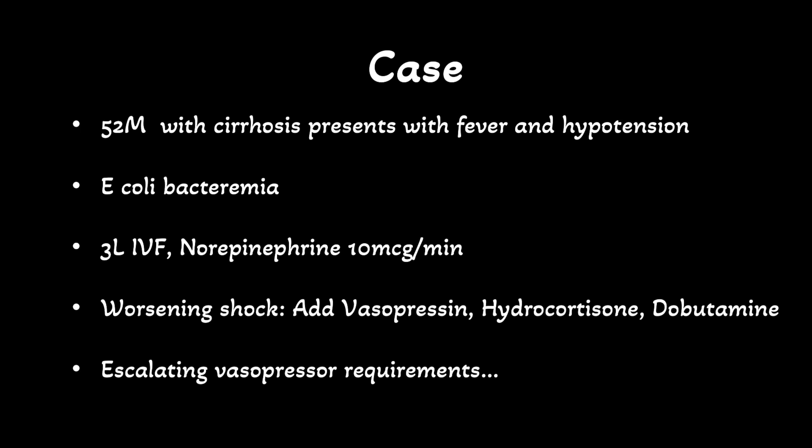Let's start with a case. A 52-year-old male with a history of cirrhosis presents to your emergency department with fever and hypotension. He has a distended tender abdomen with tense ascites. You make the presumptive diagnosis of septic shock secondary to SBP, and his blood cultures are positive for E. coli. Despite 3 liters of IV fluid, he remains hypotensive, so you start him on a norepinephrine infusion and intubate him.